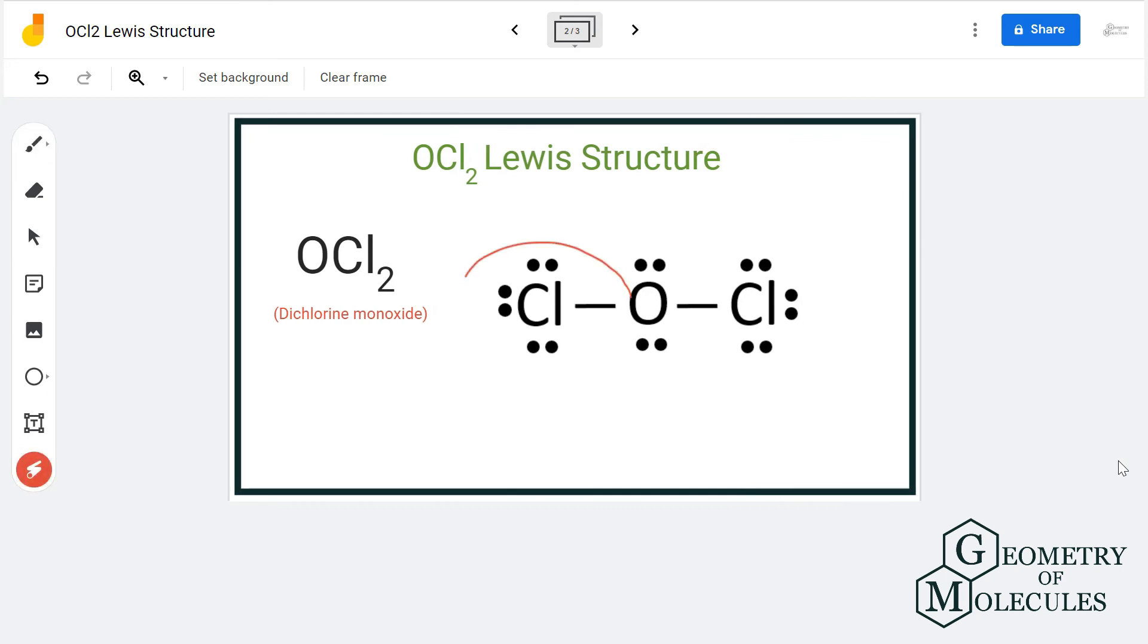And oxygen also has a complete octet because it has eight valence electrons in its outer shell. So this is the Lewis structure for dichlorine monoxide.